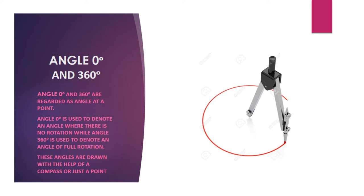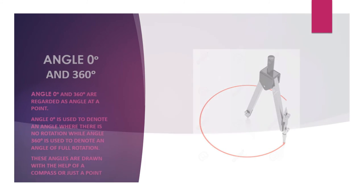Angle 0 and 360 degrees are regarded as the angle at a point. Angle 0 degrees is used to denote an angle where there is no rotation, while angle 360 degrees is used to denote an angle of full rotation.